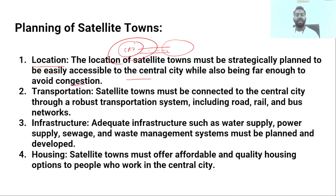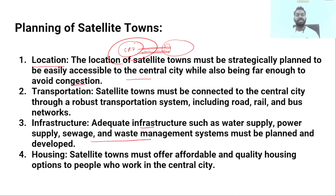If there is a small railway station, you will see that the satellite town connects through railway. Other transport options such as bus, minibus, and city bus can also operate from here. Infrastructure — water supply, power supply, sewage, and waste management systems — must be planned and developed, because we are developing new cities and new areas that need all the infrastructure.